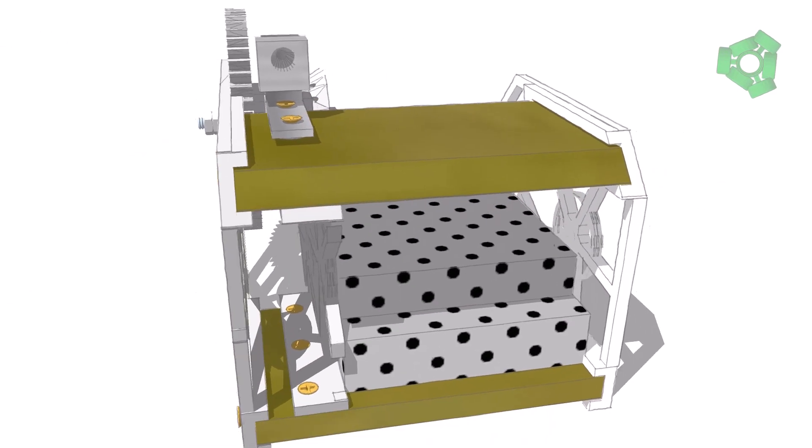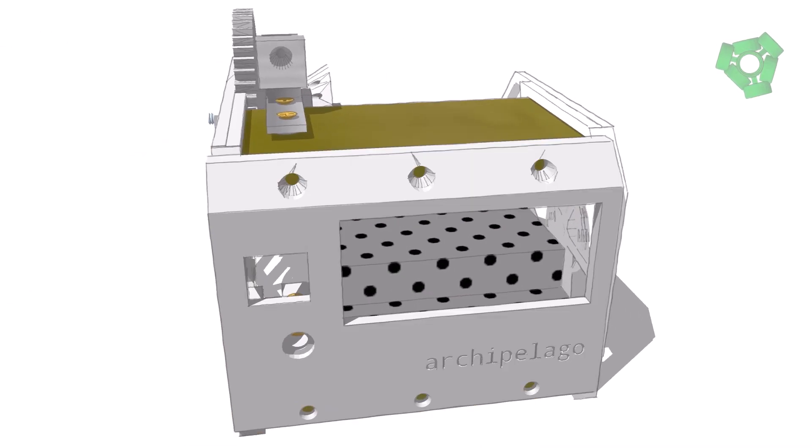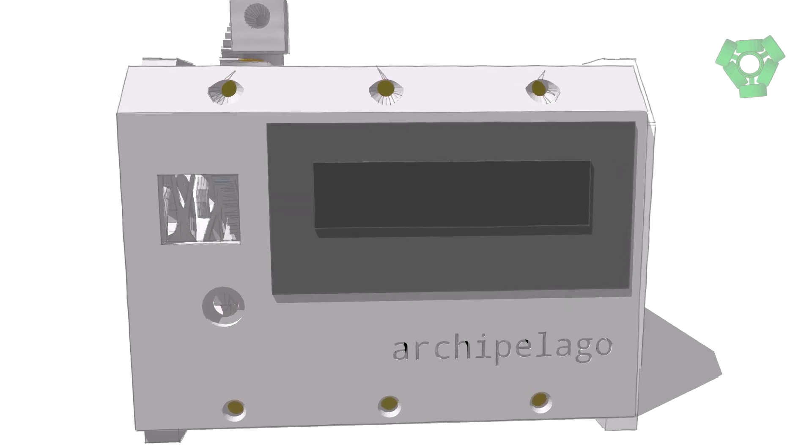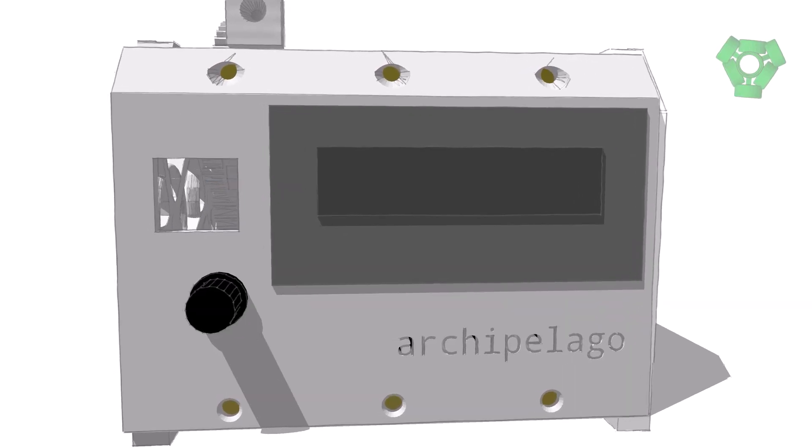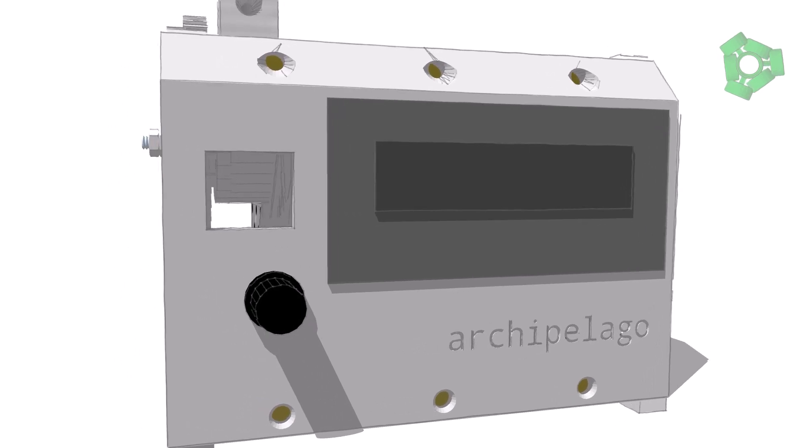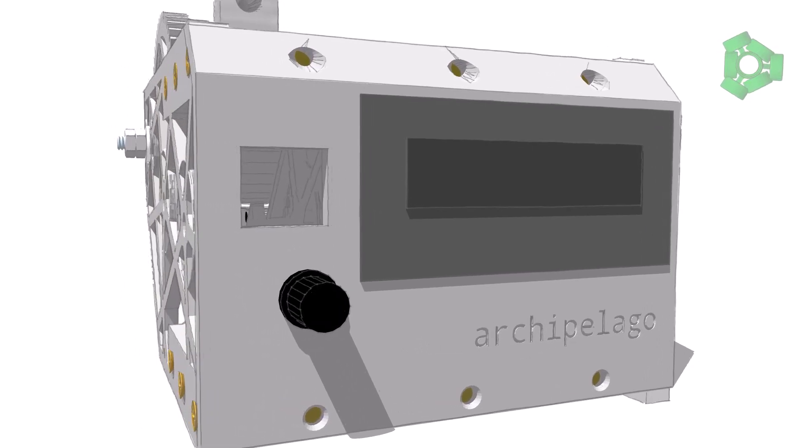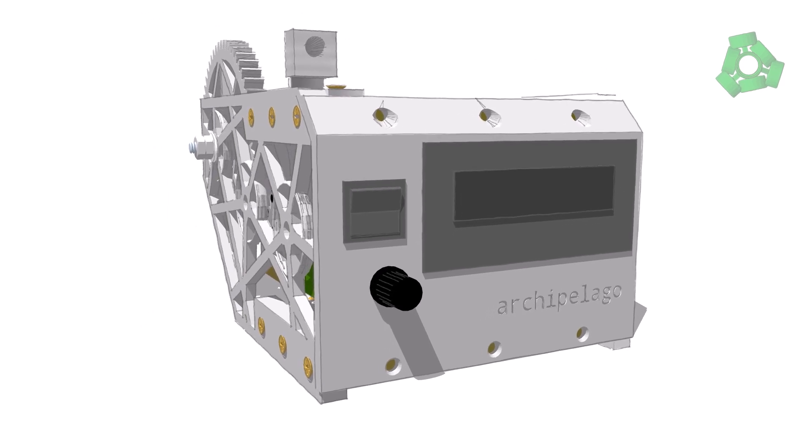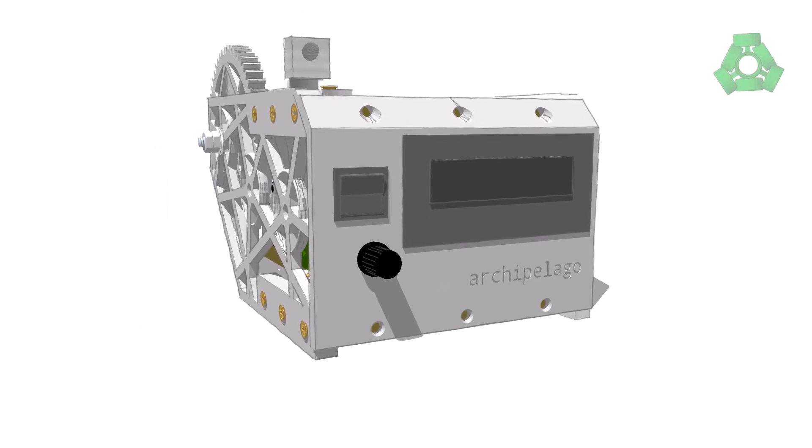Slide the thermal controller into the faceplate. Slide the PWM potentiometer through the faceplate from behind and attach the plastic nut. Use hot glue to secure it to the faceplate if necessary. Push the switch through the remaining opening in the faceplate.